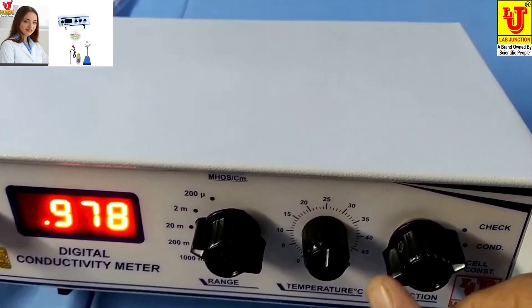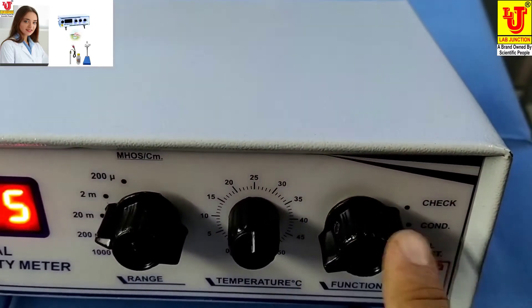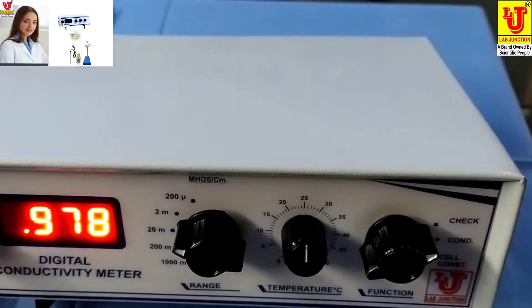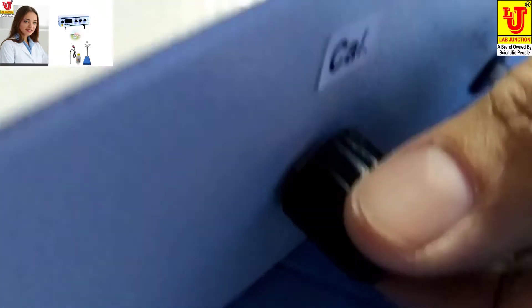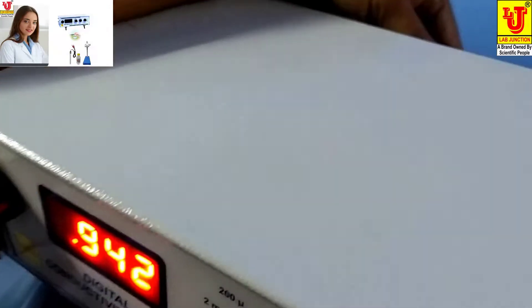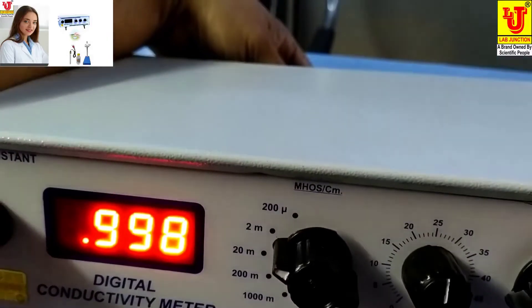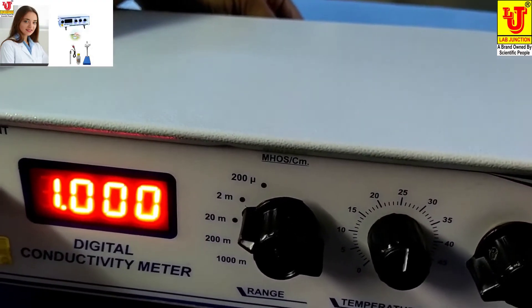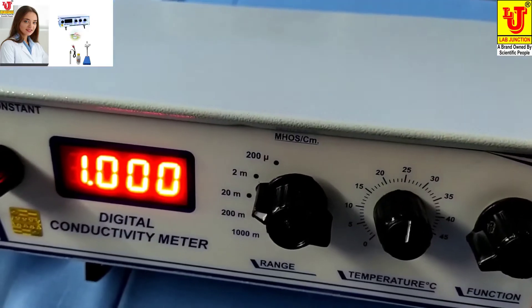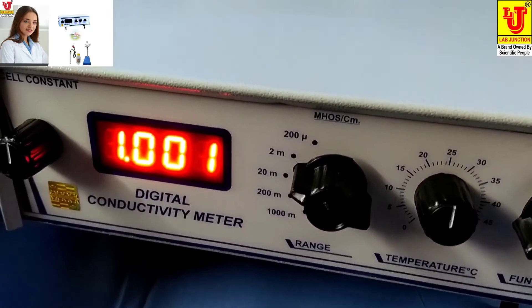First, you have to set the function control to check position. On the back side, the cal knob is there. You have to set it to 1.000. If it is blinking, you can set it again.